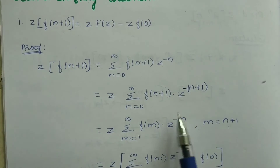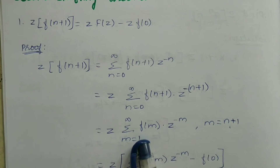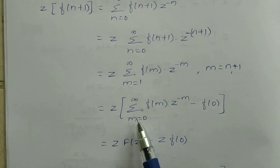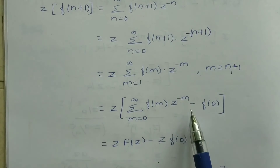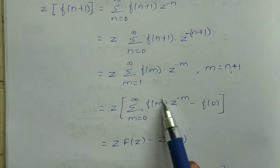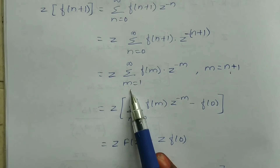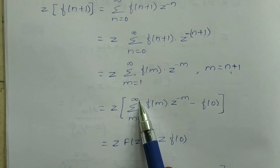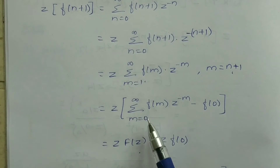This is m. We substitute so that n equal to 0 gives m equal to 1, meaning the summation runs from m equal to 1 to infinity. Using the Z-transform formula which requires summation from 0 to infinity, we adjust: the 1-to-infinity range becomes 0-to-infinity by subtracting the f(0) term. That way we can apply the standard formula properly.